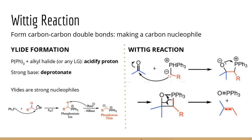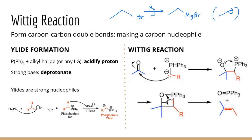The Wittig reaction is perhaps the most important reaction with carbonyls because we can form new carbon-carbon bonds. It has two parts. First, we make a carbon nucleophile — a phosphorus ylide. Similar to Grignard, we take a carbon electrophile and make it a nucleophile. We do SN2 with a phosphorus compound (triphenylphosphine) to replace the leaving group and form a phosphonium ion.